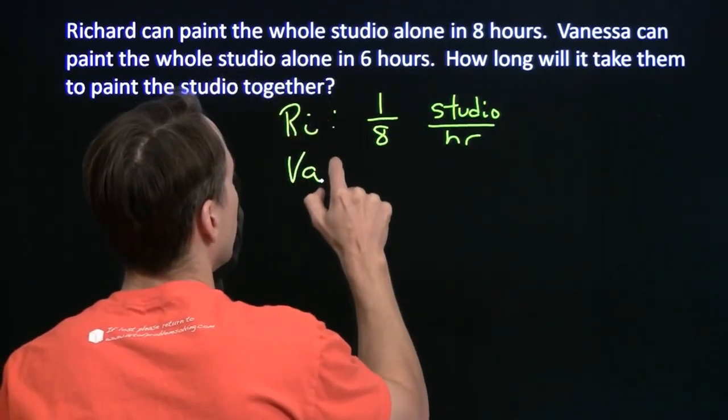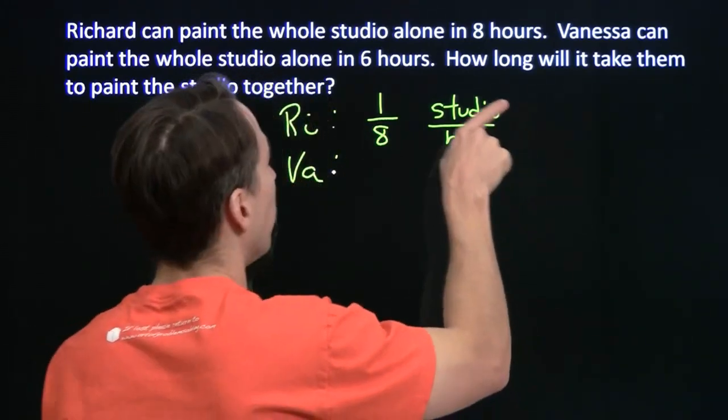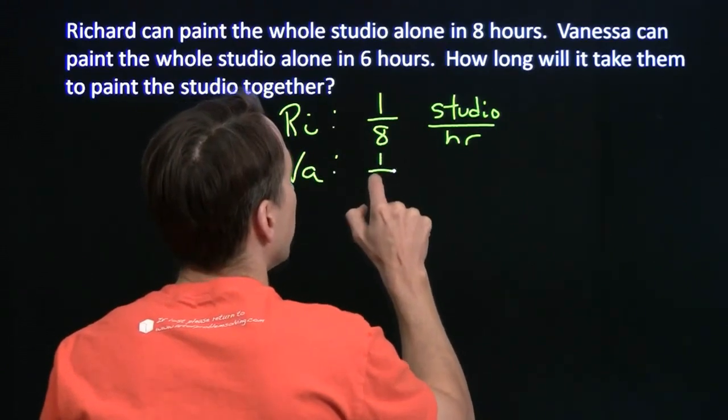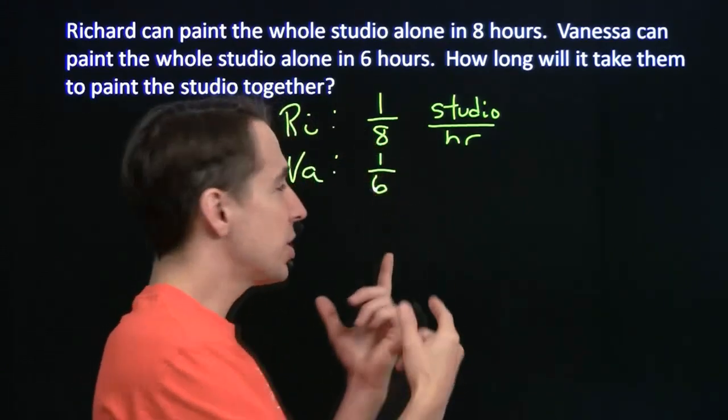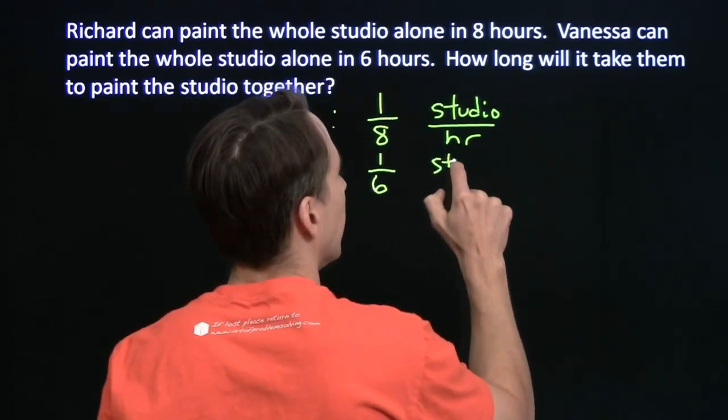And Vanessa, she's faster when I don't slow her down. She could do the whole thing by herself in six hours. So each hour, she's going to do one-sixth of the studio, and that's her rate.